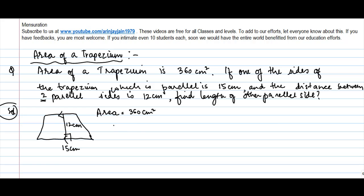Now we know that area of a trapezium is what? It is a general quadrilateral. Area of a trapezium which is equal to 360 centimeter square is equal to half into height into sum of the parallel sides. So P1 plus P2, right?